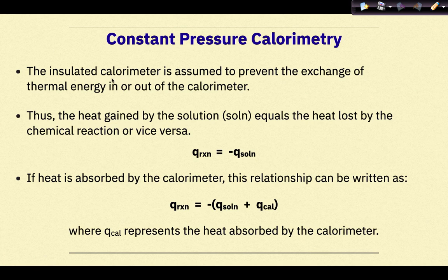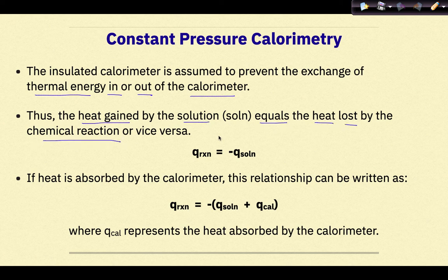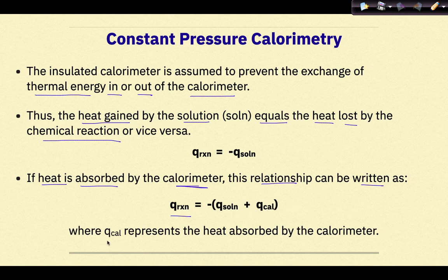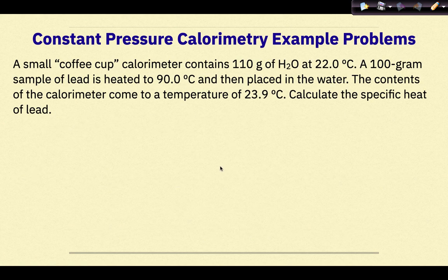The insulated calorimeter is assumed to prevent the exchange of thermal energy in or out of the calorimeter. Thus, the heat gained by the solution equals the heat lost by the chemical reaction, and vice versa. If heat is absorbed by the calorimeter, the relationship can be written as q reaction equals negative q solution plus q cal, where q cal represents the heat absorbed by the calorimeter.